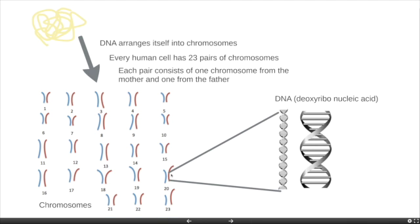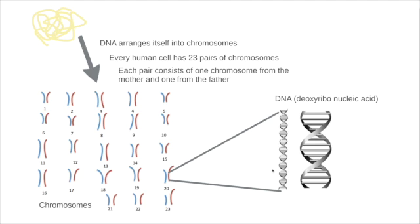If we were to zoom in on a particular section of a chromosome we would see a DNA helix — the DNA all wrapped up within the chromosomes. DNA stands for deoxyribonucleic acid and this is your genetic information. So we've come from the cell, we've gone into the nucleus where the genetic information is, we've said that genetic information can be packaged into chromosomes — 23 pairs, one from your mother and one from your father, so 46 chromosomes in total — and then in a small section of chromosome you can see the DNA.